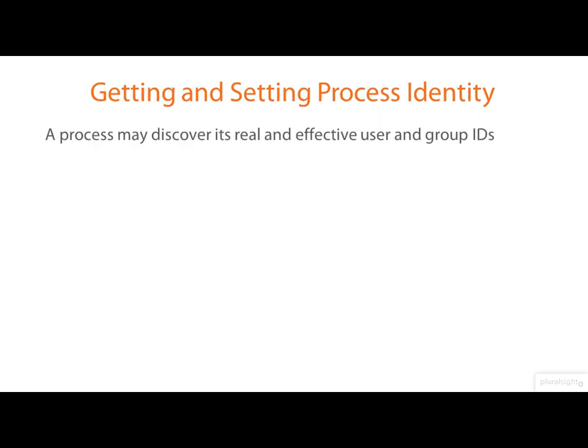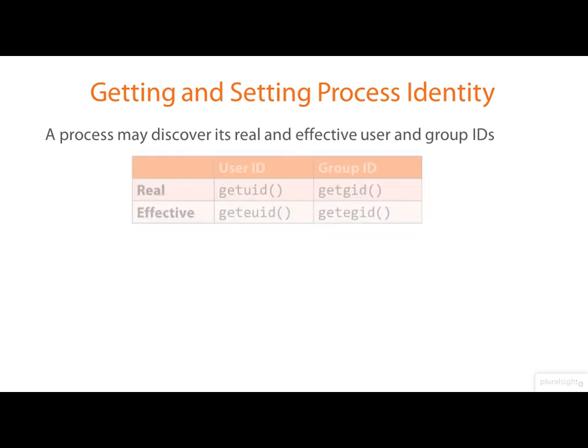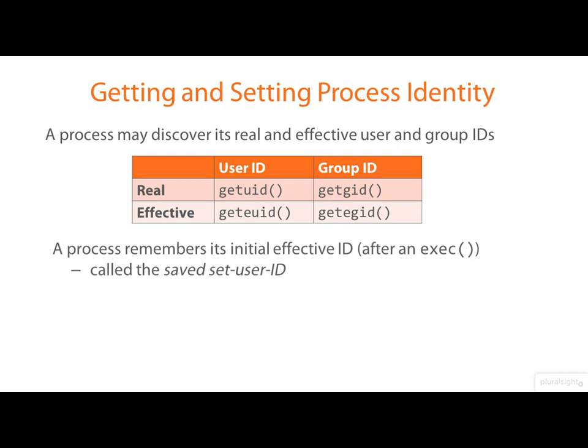Getting back to the nitty-gritty, a process can discover its real and effective user and group IDs through the four system calls shown here. My emphasis in this section is on user and effective user IDs, but very similar comments could be made about group and effective group IDs as well. A process also has a saved set user ID.